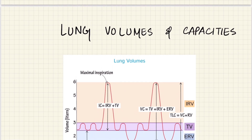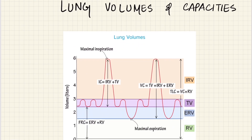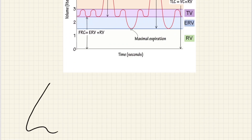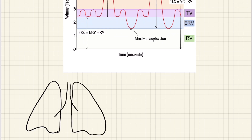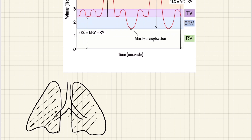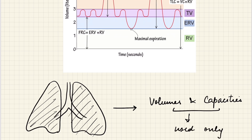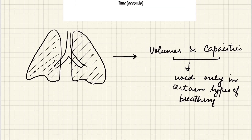We'll study about the lung volumes and capacities. When we are breathing — that is when we are inspiring and expiring — we are not using the whole of our lungs normally. There are some volumes and some capacities which are used only in certain situations, only in certain types of breathing. What these types of breathing are and how we calculate these volumes and capacities is what we have to study.